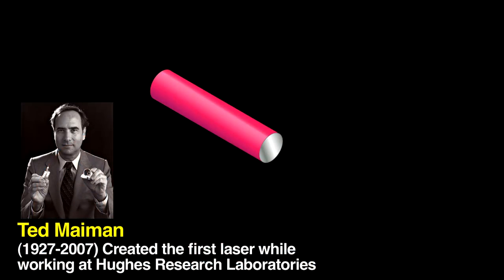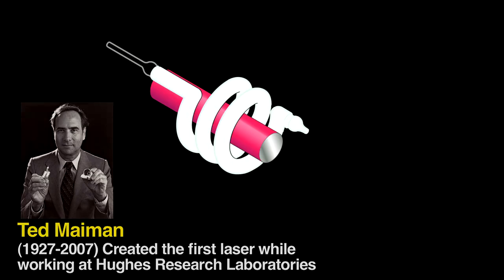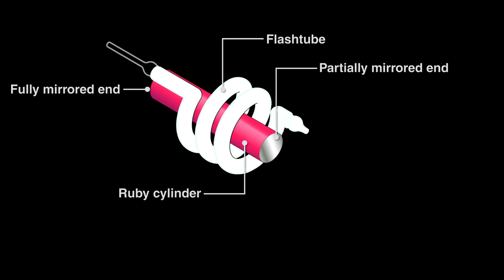In 1960, Ted Maiman demonstrated the first laser by taking a cylinder of ruby and surrounding it with a xenon arc flash lamp used in aerial photography. An intense burst of light from the lamp initiates lasing.